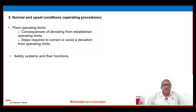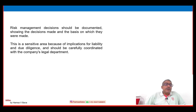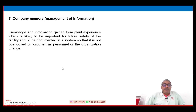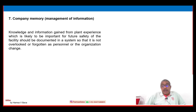Safety systems and their functions, and risk management decisions, should be documented showing the decisions made and the basis on which they were made. This is a sensitive area because of implications for liability and due diligence, and should be carefully coordinated with the company's legal department. Number seven is company memory: knowledge and information gained from plant experience that is likely to be important for the future safety of the facility should be documented so that it is not overlooked or forgotten as personnel or organizations change.